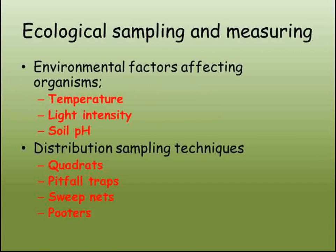We've looked at how ecologists measure environmental factors and the distribution of organisms in a given area. Environmental factors will affect which animals, and particularly which plants, will grow well in the location, and include temperature, light intensity and soil pH, all of which can be measured on location using the appropriate probes. To measure the distribution of organisms, it's important to sample an area as there will be far too many individuals to count, and this should be done randomly to prevent bias. Quadrats can be used to sample an area for plant life, pitfall traps collect ground-based small animals such as beetles and bugs, sweep nets are useful for sampling flying insects and pond life, while pooters can be used to suck up small individual creatures to enable them to be identified more easily.